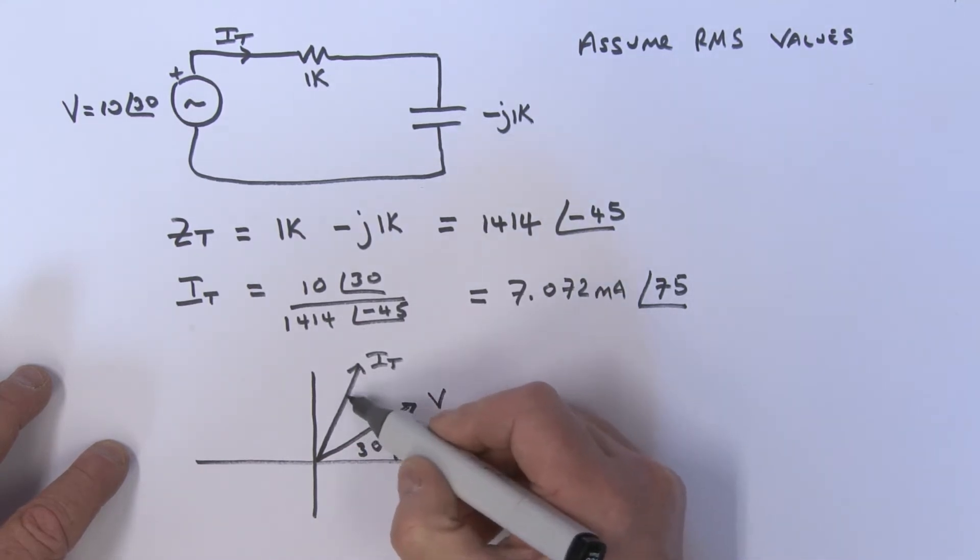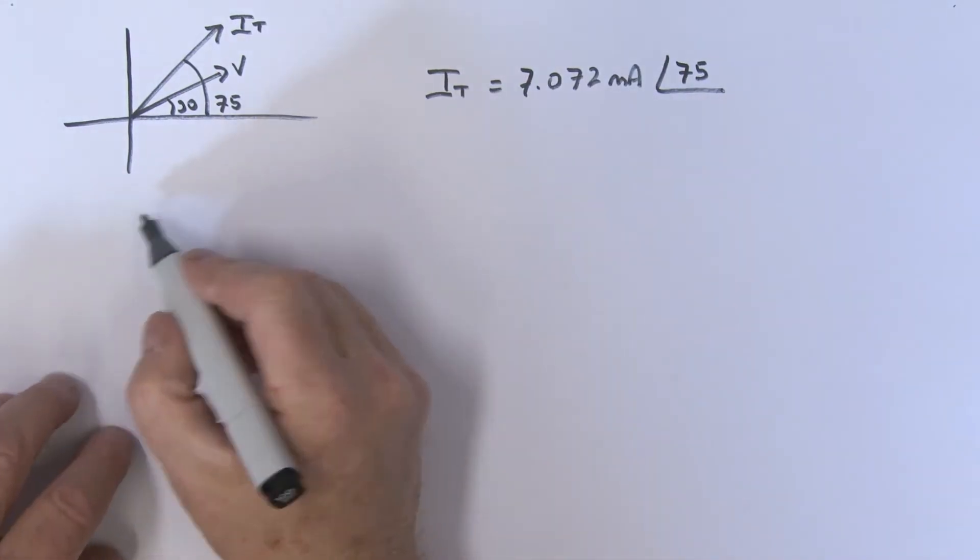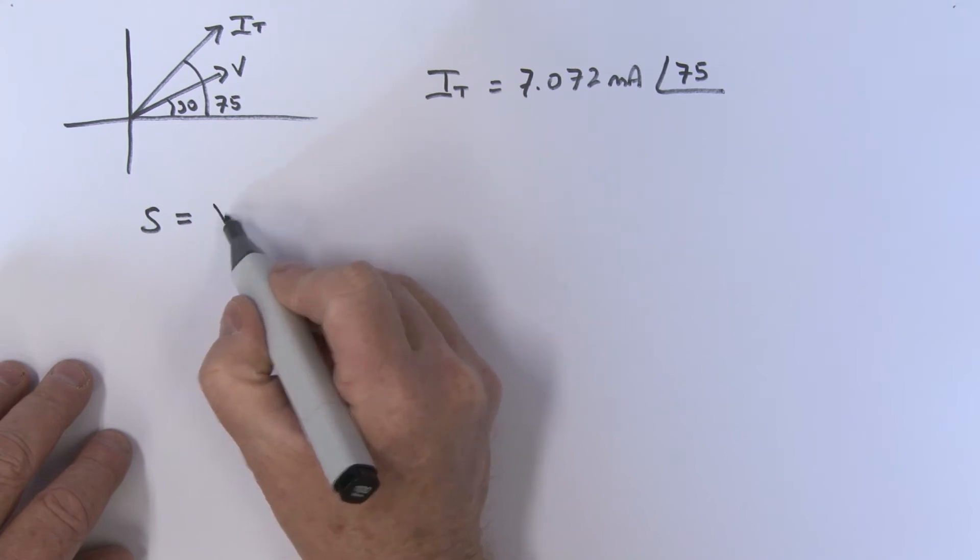So from here to here is my 75 degrees. Now what we're interested in really is the angle difference between this current and this voltage over here.